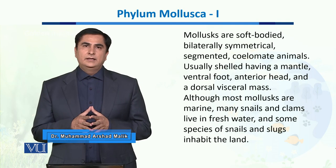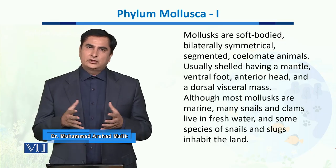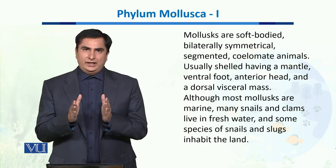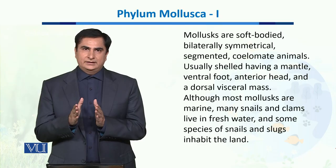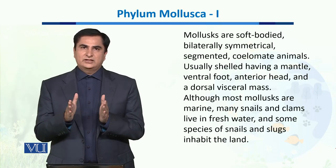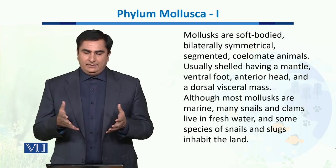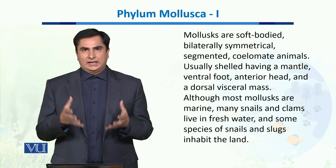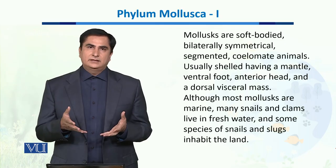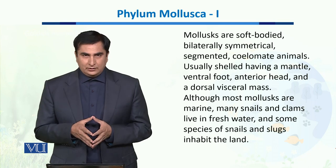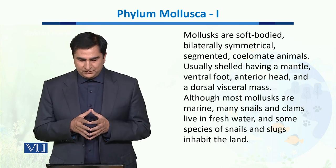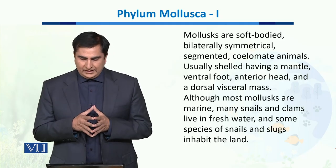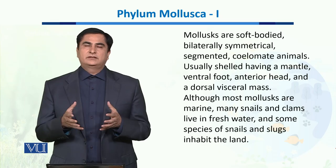When we talk about their body, they are soft-bodied animals and they are bilaterally symmetrical, which means that their body is symmetrical on both sides — right and left. They are coelomate animals and they usually have shells around them called the mantle. They have a ventral foot which helps them in locomotion, an anterior head which has sensory organs, and a dorsal visceral mass.